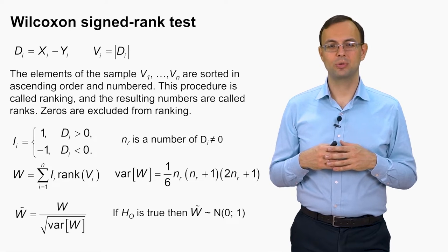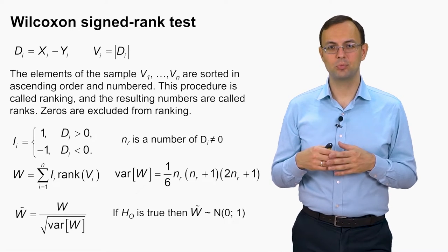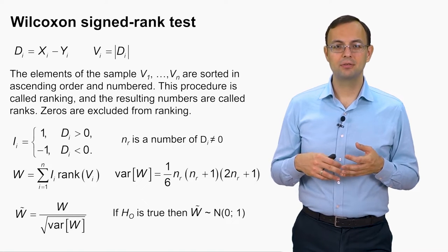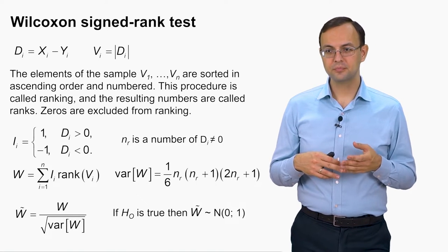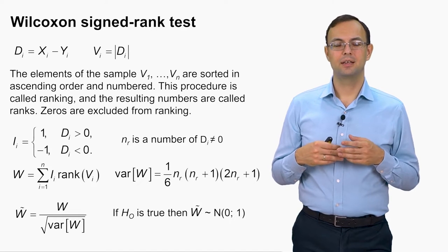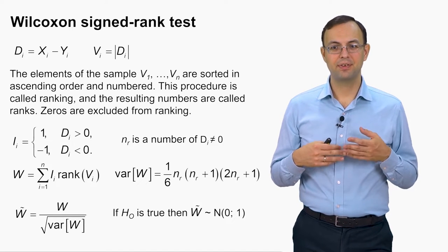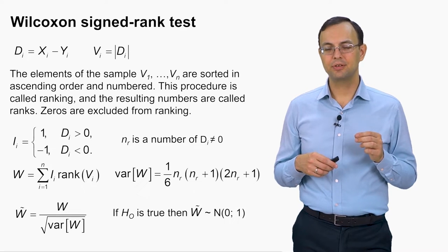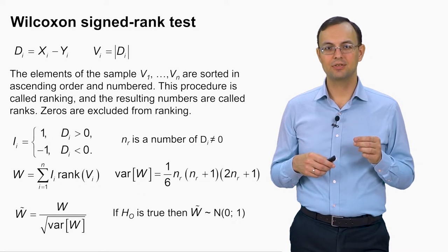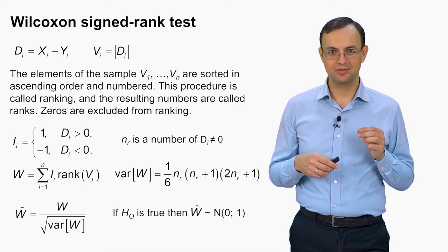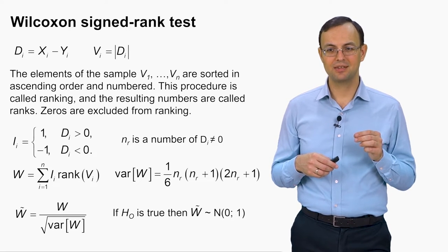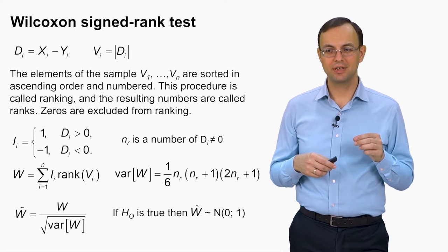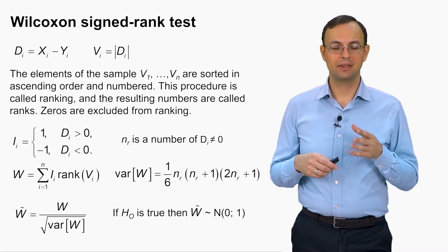Actually, also the standard step is to subtract the expected value. So usually when we want to standardize a random variable, we subtract expected value and then divide by the square root of variance. But here expected value is 0. So that is why it is enough just to divide by the variance. And so standardized random variable W is used as a test statistic here. So W tilde is the test statistic of this test. It is equal to W divided by the square root of its variance. The formula for the variance is provided.